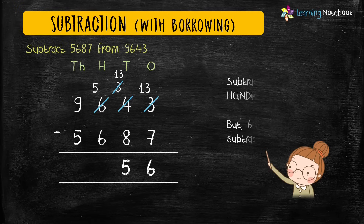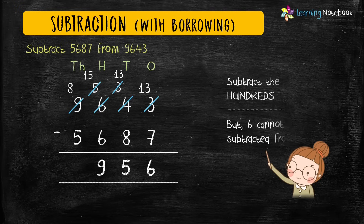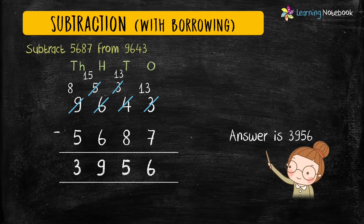Now let's move on and subtract the digits at hundreds place. But again, 6 cannot be subtracted from 5. So let's borrow from thousands place, so 9 becomes 8 and 5 becomes 15. Now, 15 minus 6 equals 9. And in the end, let's subtract the digits at thousands place: 8 minus 5 equals 3. So our answer is 3956.